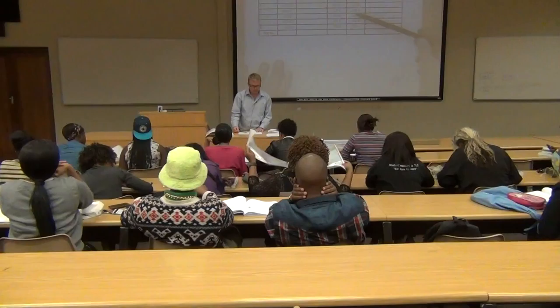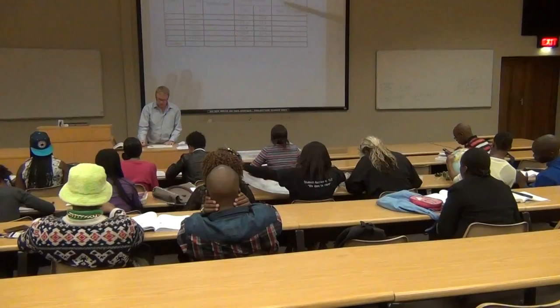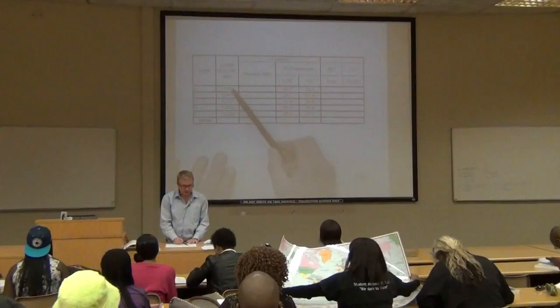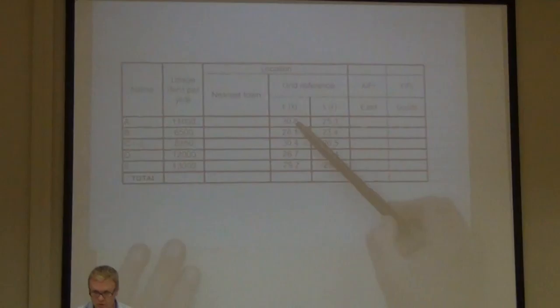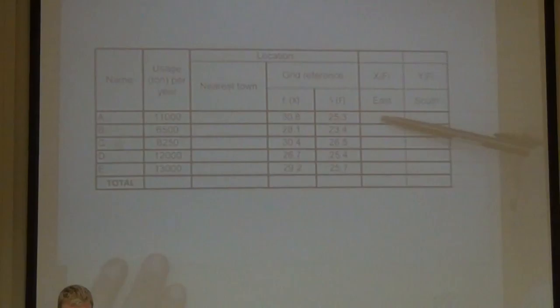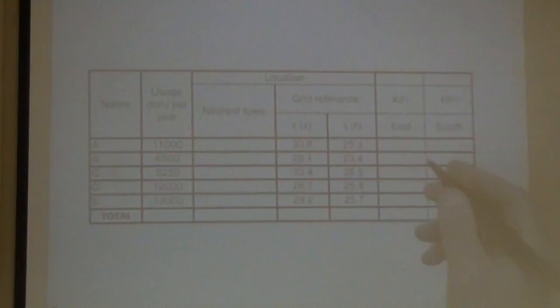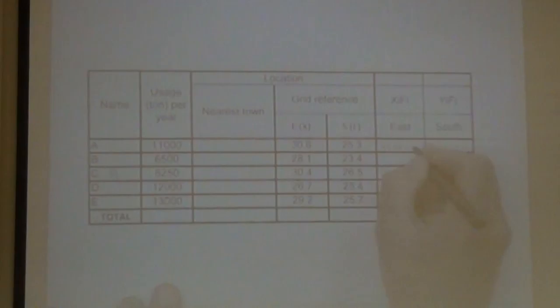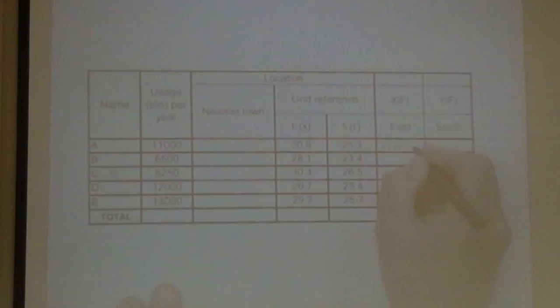This is a table of the given information. To calculate the XIFI we multiply the usage per year by the X coordinate. For station A with 11,000 tons per year, the XIFI is 338,800 and the YIFI for station A is 278,300.